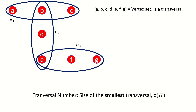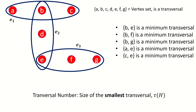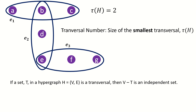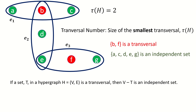There's often not a unique minimum transversal. For example, our current hypergraph has several minimum transversals, all requiring at least two vertices, so our transversal number is 2. It's important to know that if a set T is a transversal, then the complement of T — that is, all the vertices in the hypergraph not in T — is an independent set. This comes from the fact that every edge has at least one vertex in T, so the set of vertices not in T cannot include an entire edge as a subset. As an example, BF is a transversal, while its complement is an independent set.